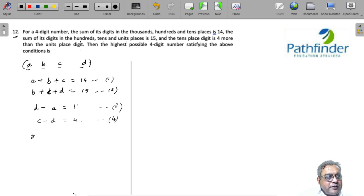For example, d cannot be 6. Why? Because if d is 6 then c has to be 10, but c is a single digit number. So maximum possible value of d can only be 5, and therefore maximum possible value of c can only be 9.